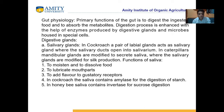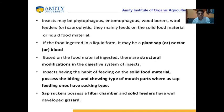Midgut physiology is related to different hormones secreted by the midgut. There are digestive glands like salivary glands. In cockroach, labial glands act as salivary glands and secrete into the salivarium. In caterpillar, mandibular glands are modified to secrete saliva, where the salivary glands are modified for silk production. Functions of saliva include: to moisten and dissolve food, to lubricate mouthparts, and to add flavor detected by gustatory receptors. In cockroach, saliva contains amylase for digestion of starch.